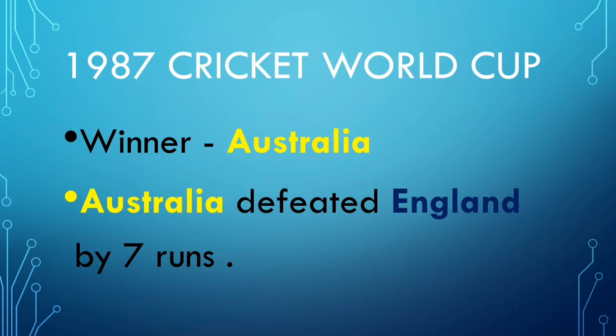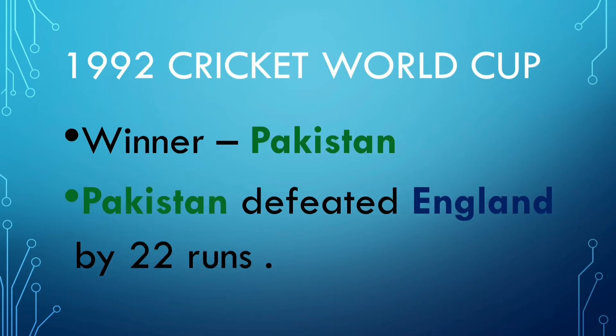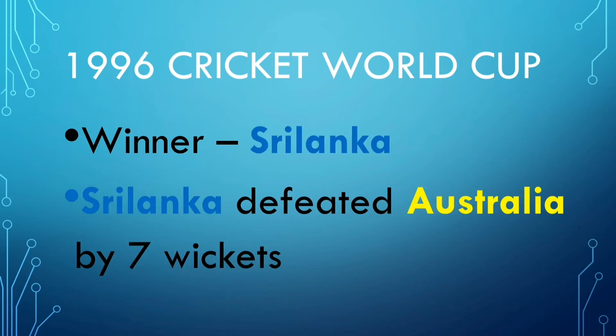1987 Cricket World Cup Winner: Australia. Australia defeated England by 7 runs. 1992 Cricket World Cup Winner: Pakistan. Pakistan defeated England by 22 runs. 1996 Cricket World Cup Winner: Sri Lanka. Sri Lanka defeated Australia by 7 wickets.